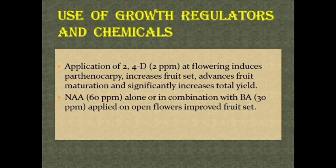Use of growth regulators and chemicals. Application of 2,4-D at flowering induces parthenocarpy, increases fruit set, advances fruit maturation, and significantly increases total yield. NAA alone or in combination with BA applied on open flowers improved fruit set.